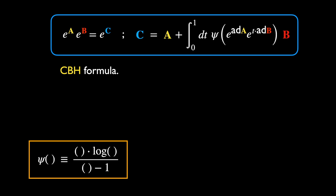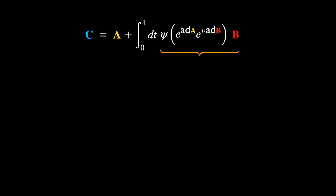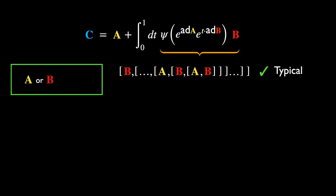The CBH formula tells us how the exponential of two operators can be combined to give an exponential of a third operator, and exactly how this is related to the previous two. Let's take a closer look at the term consisting of all the nested commutators. If we expand psi as a series in terms of the adjoint actions of A and B, a typical term is a nested commutator: a commutator of either A or B with another commutator of similar structure — precisely what we expect from powers of adjoint actions in the power series of psi.